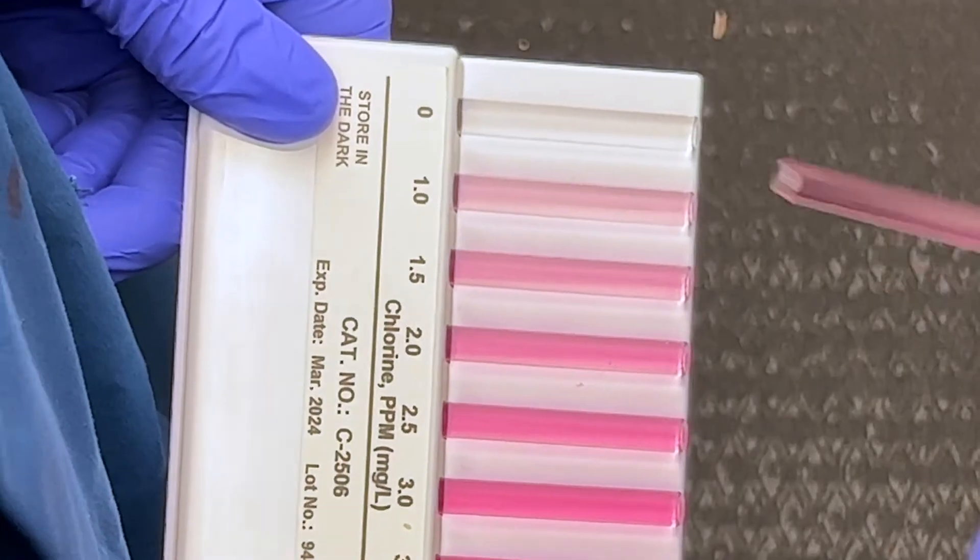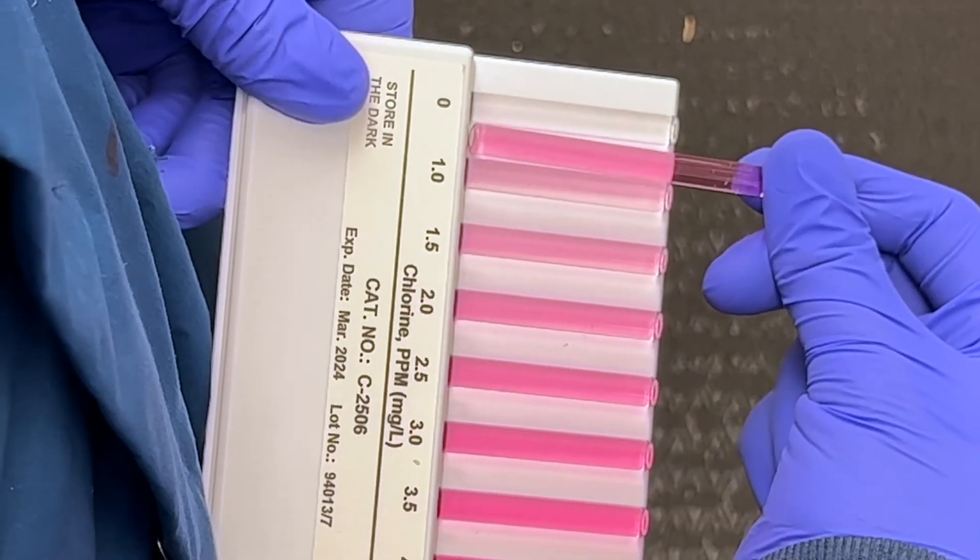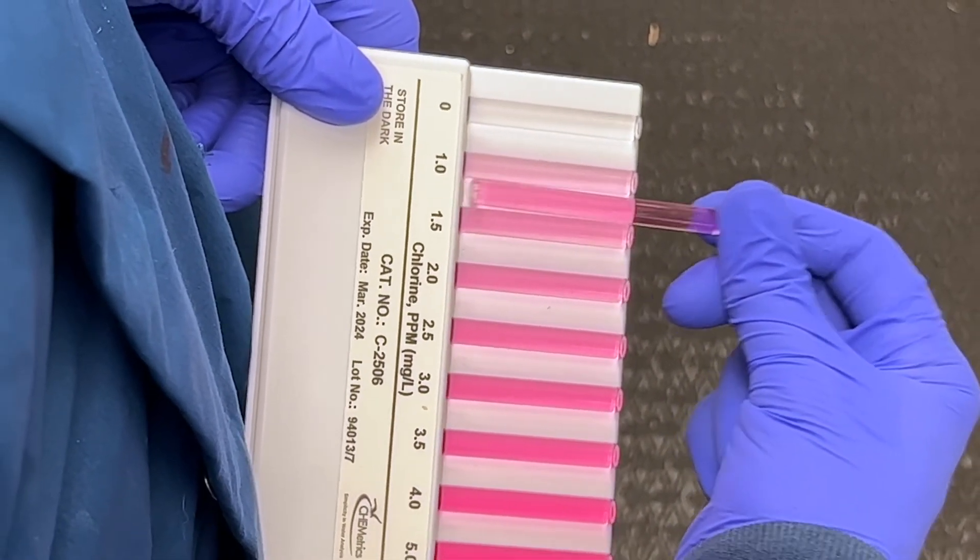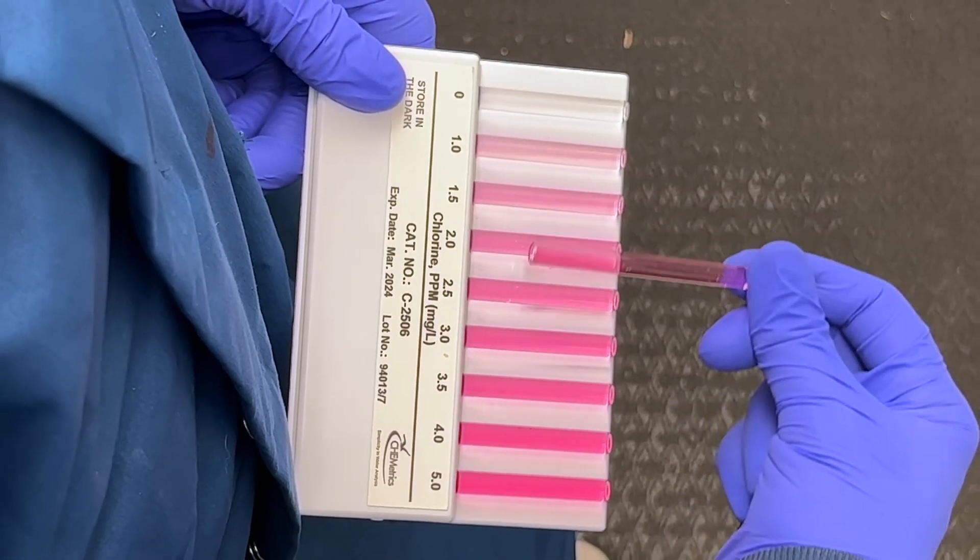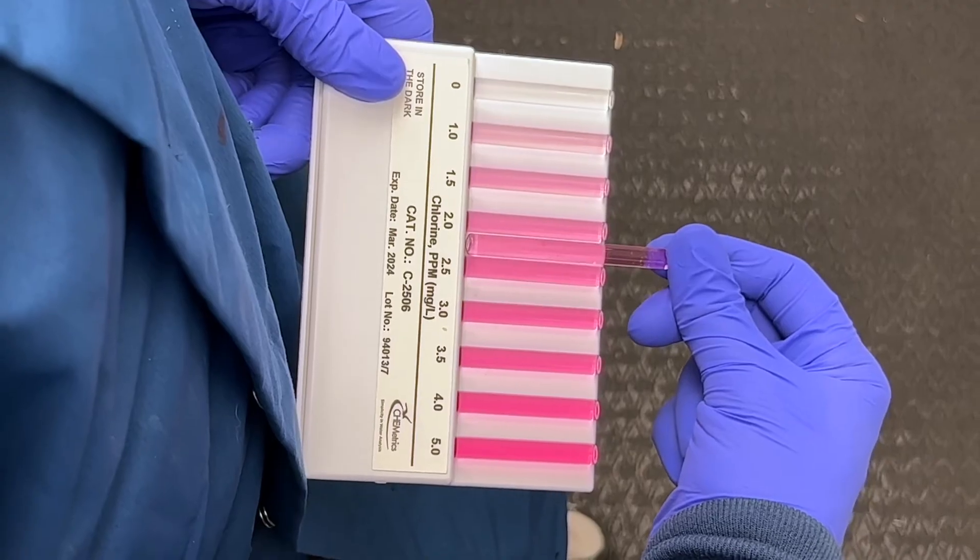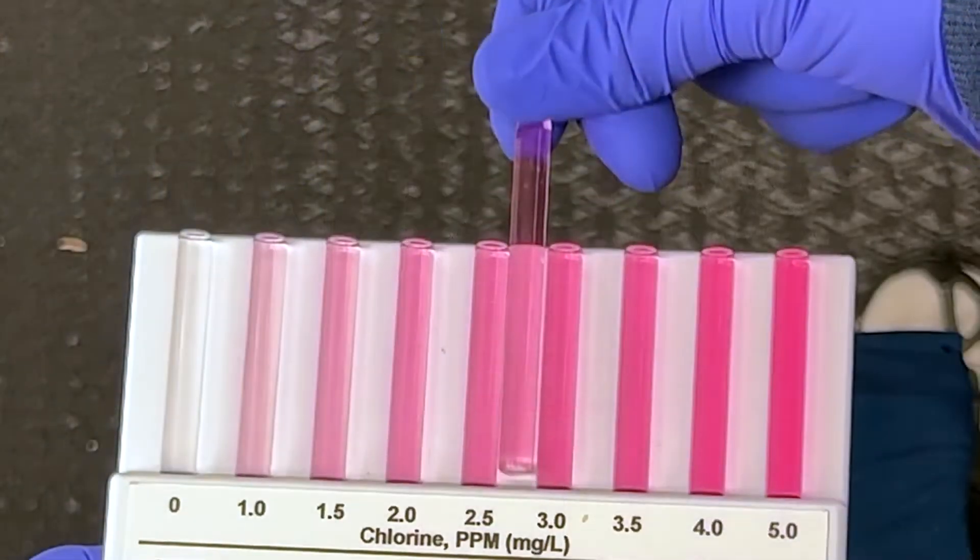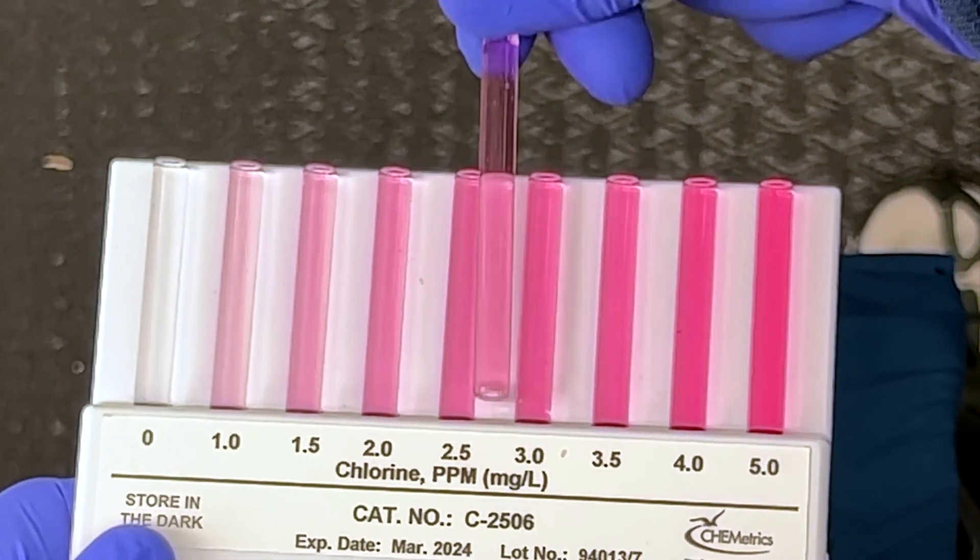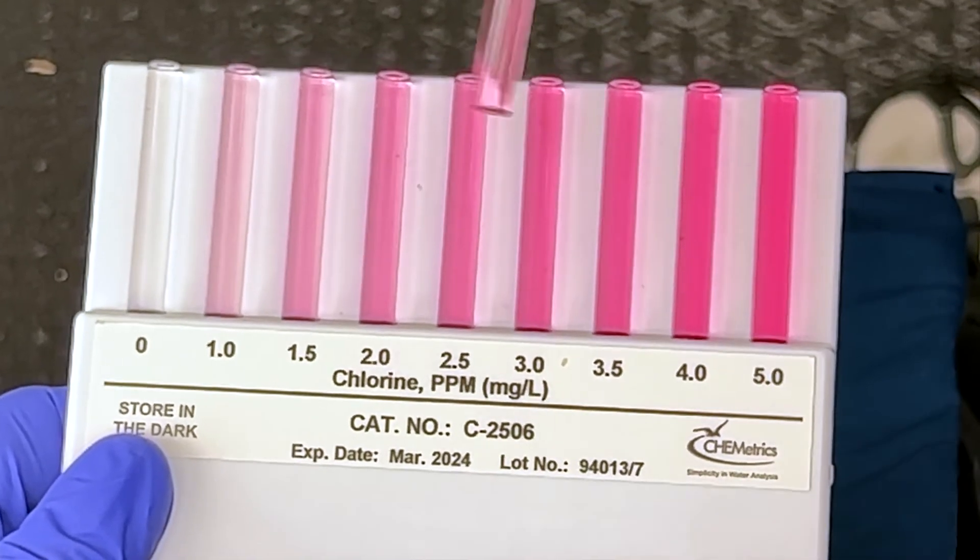Next, the test ampoule should be placed between the first and second color standards at the left or lower concentration end of the comparator. Progressively move the ampoule to the right until the intensity of the test ampoule appears to be in between two nearly matching standards. Alternately move the test ampoule to the right and left as subtle changes in the viewing angle can make the test ampoule look more or less intense than an adjacent standard.